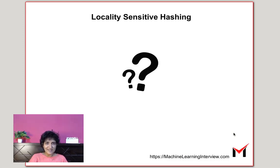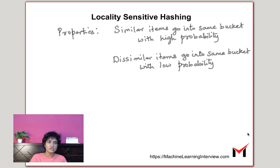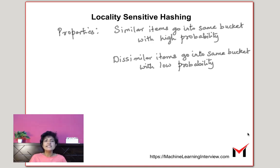Locality-sensitive hashing is the process of assigning a hash to items such that similar items end up with the same hash or go into the same bucket with high probability, and dissimilar items end up going into the same bucket or have the same hash with low probability. In other words, dissimilar items should have a different hash or should end up in different buckets.